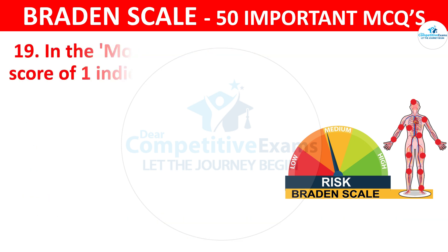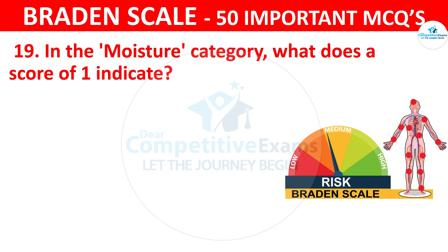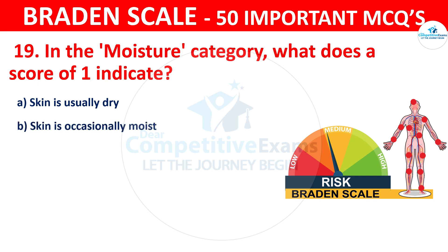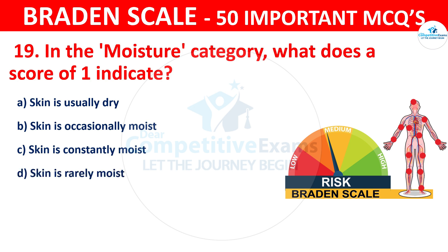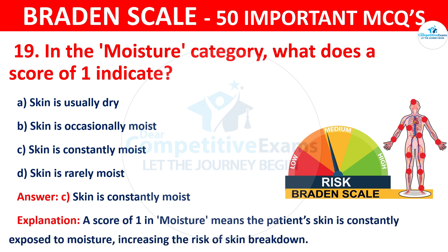Question number nineteen: In the moisture category, what does a score of one indicate? Your options are skin usually dry, skin is occasionally moist, skin is constantly moist, or skin is rarely moist. The correct answer is C — skin is constantly moist. A score of one in moisture means the patient's skin is constantly exposed to moisture, increasing the risk of skin breakdown.